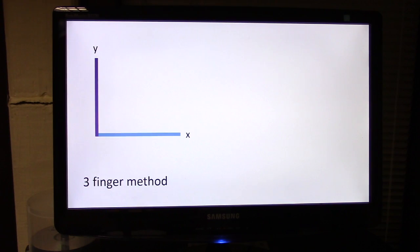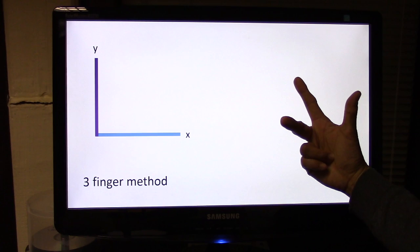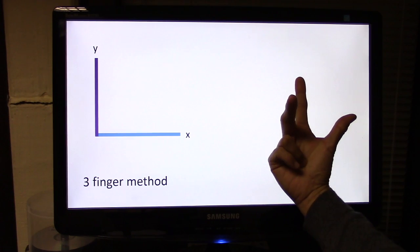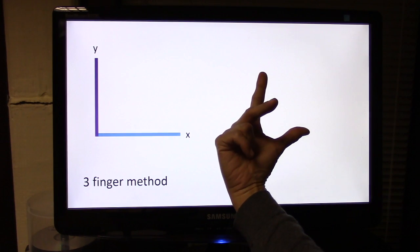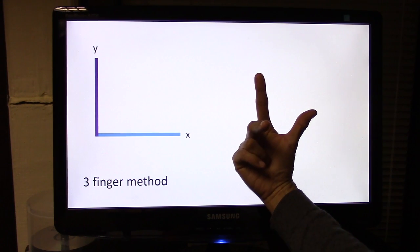Let's start with the three finger method. You have Cartesian axes X and Y. Make your hand into this shape. Your thumb has to be pointing in the direction of the X, your second finger points in the direction of the Y, and your third finger will point in the direction of Z.